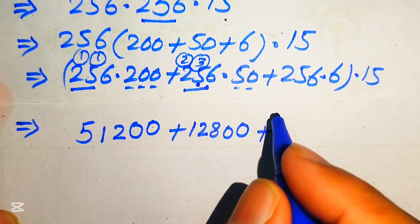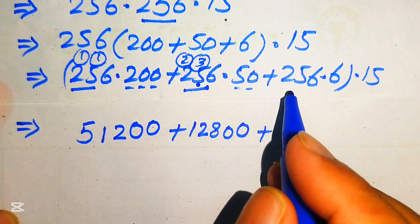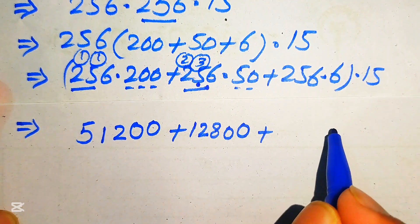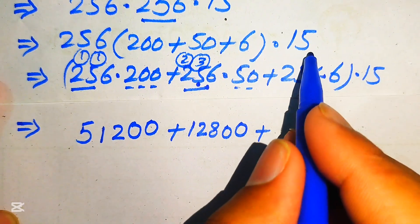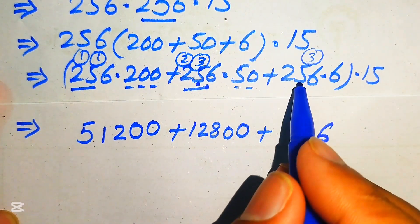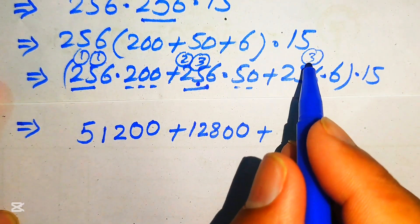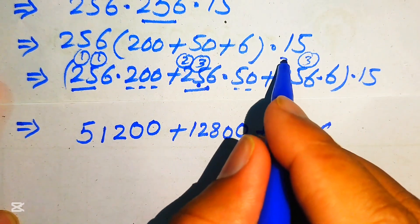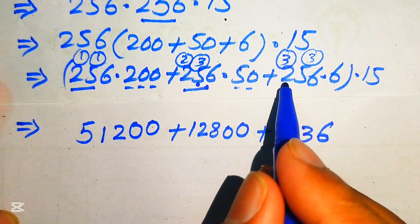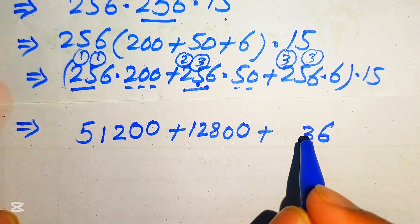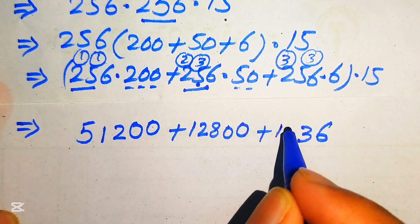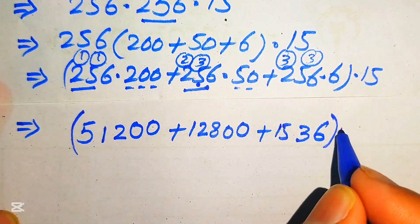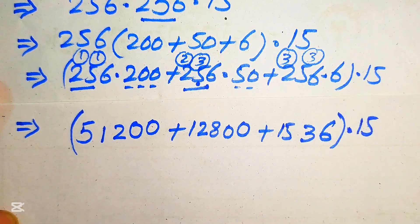For 256 × 6: 6 × 6 = 36, write 6 carry 3; 6 × 5 = 30 plus 3 = 33, write 3 carry 3; 6 × 2 = 12 plus 3 = 15. So 256 × 6 = 1536. At the last step this is multiplied by 15.